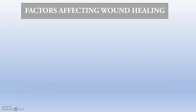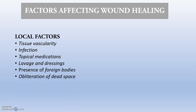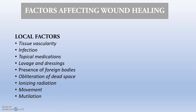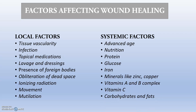The factors affecting wound healing include local factors such as tissue vascularity, infection, topical medications, lavage and dressings, presence of foreign bodies, obliteration of dead space, ionizing radiations, and movement and mutilation. Systemic factors include advanced age, nutrition, protein content, glucose content, minerals like zinc and copper, vitamins A, B complex, and C, carbohydrates, and blood sugar level.